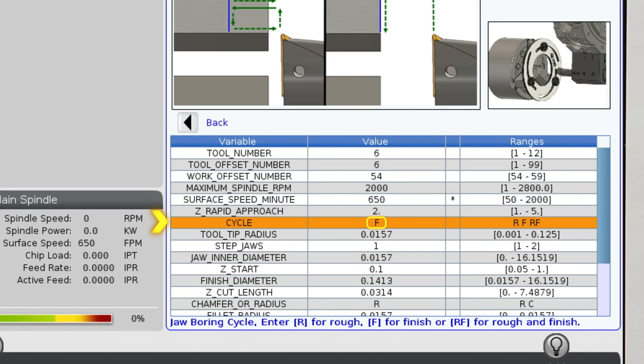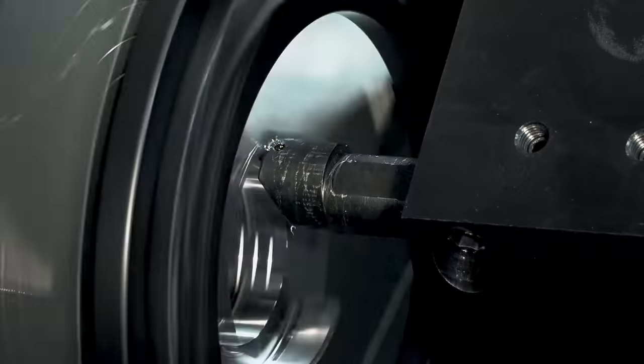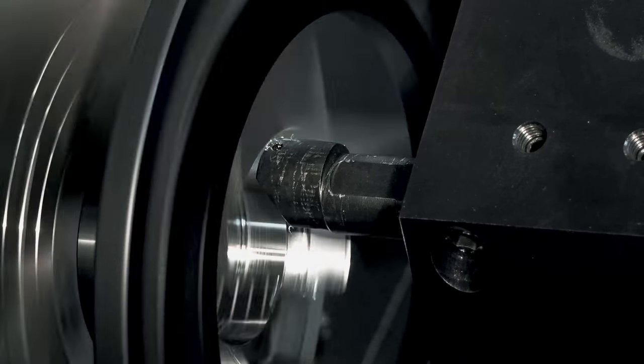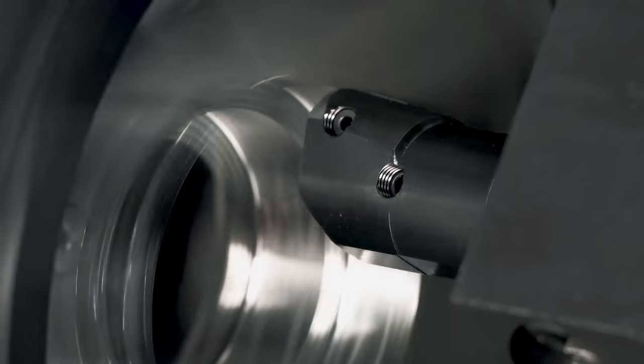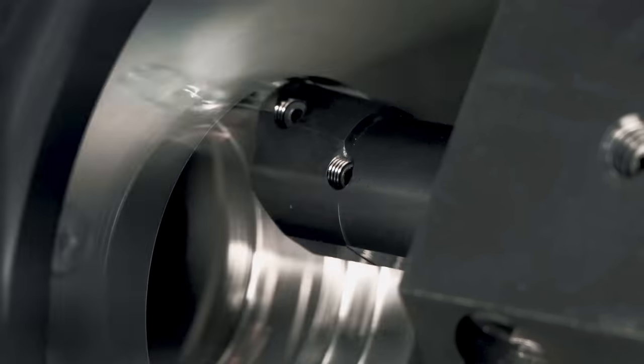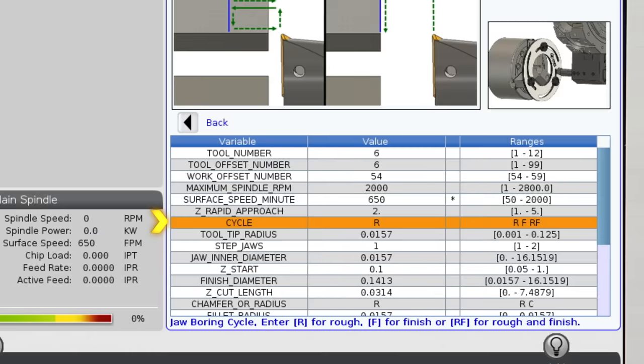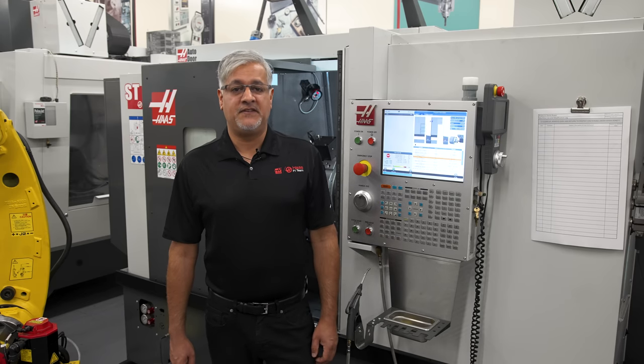The template default is purposely set as F for a finishing profile because this cycle is usually the most commonly performed. This cycle will skin the jaw diameter and jaw face only. There is also an option to rough the jaws by entering R value. This is generally used on a new set of soft jaws or when modifying an older set. The third option is RF which combines both cycles rough and finish. This is the cycle we will select for this presentation.